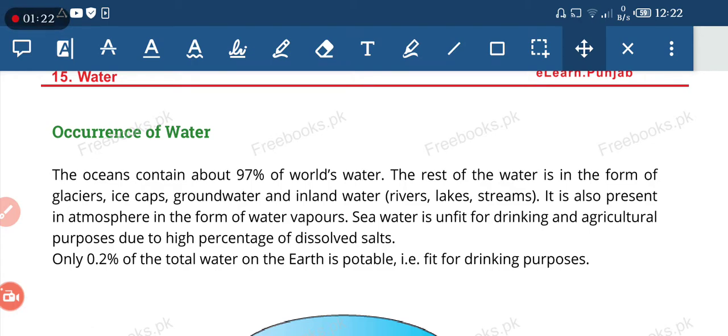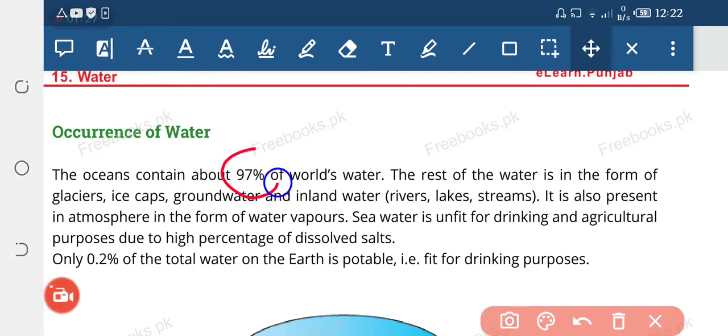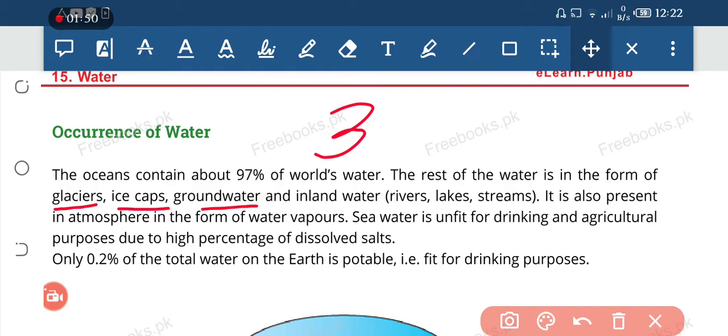Occurrence of water. The ocean contains about 97% of the world's water. The rest of water is in the form of glacier, ice cap, ground water, inland water, which is also present in the atmosphere in the form of water vapor.